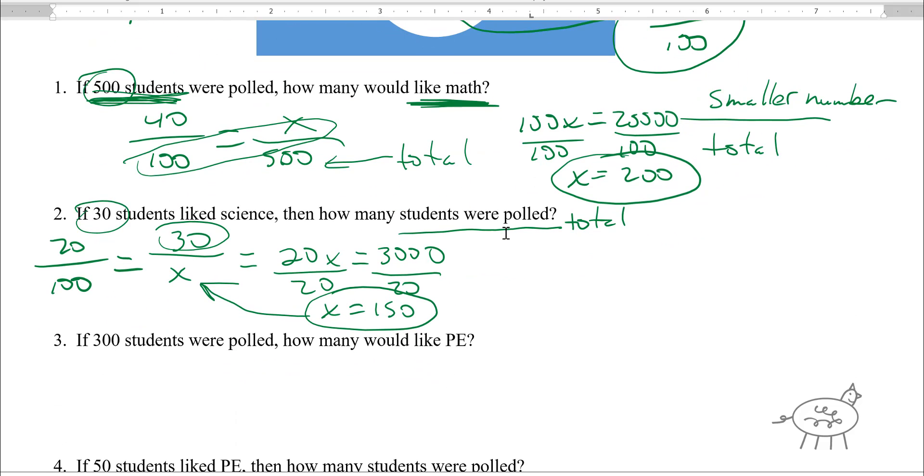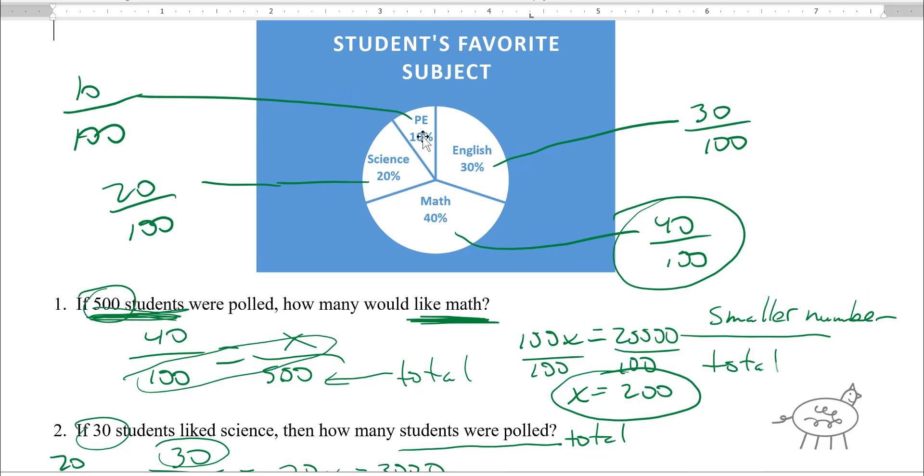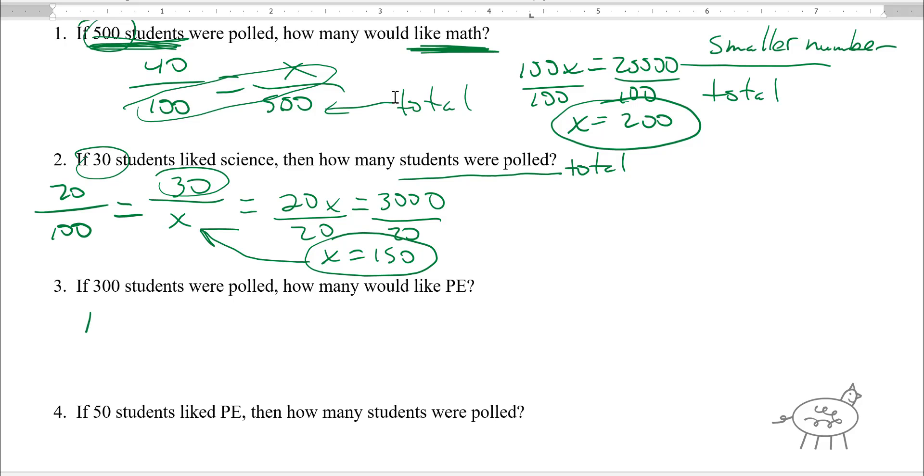Let's go to number three. If 300 students were polled, how many would like PE? I'm going to go to PE right away, PE is 10 over 100. How many would like PE? That's my small number. The total is on the bottom. So we get 100x equals 3,000 divided by 100, x equals 30. So 30 people would like PE.